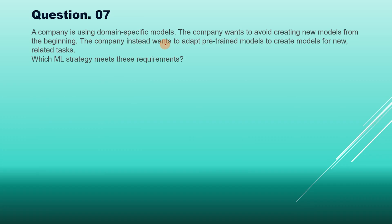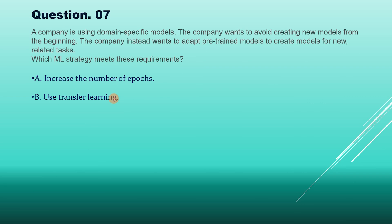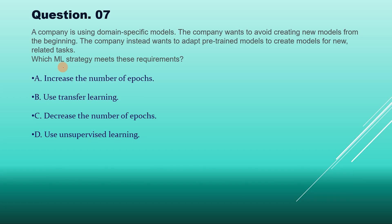Question 7: A company is using domain-specific models and wants to avoid creating new models from scratch. The company instead wants to adapt pre-trained models to create models for new related tasks. Which ML strategy meets these requirements? Options: A) Increase the number of epochs, B) Use transfer learning, C) Decrease the number of epochs, D) Use unsupervised learning. The correct answer is option B, use transfer learning.